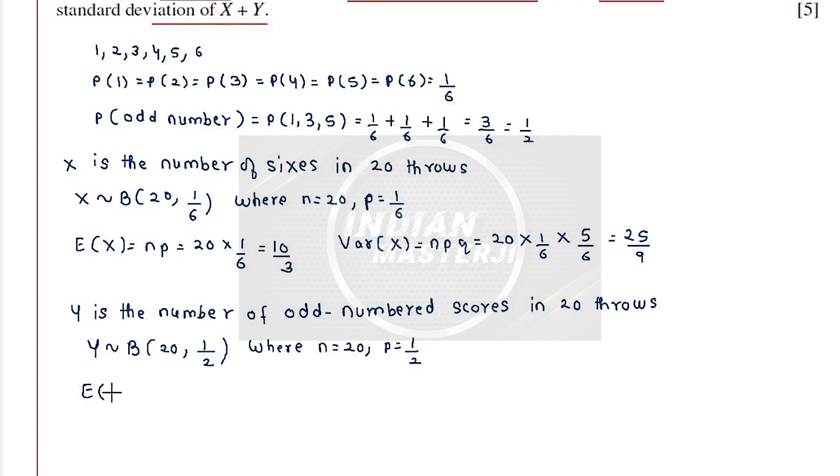So mean of Y will be equal to 20 into 1 by 2 which will be equal to 10, and variance of Y will be equal to 20 into 1 by 2 into 1 by 2. So that will be equal to 5.